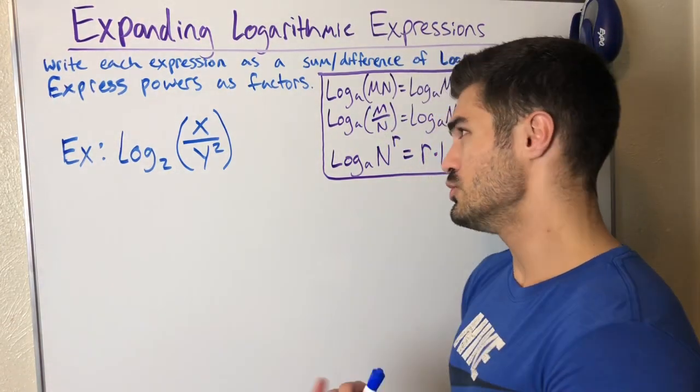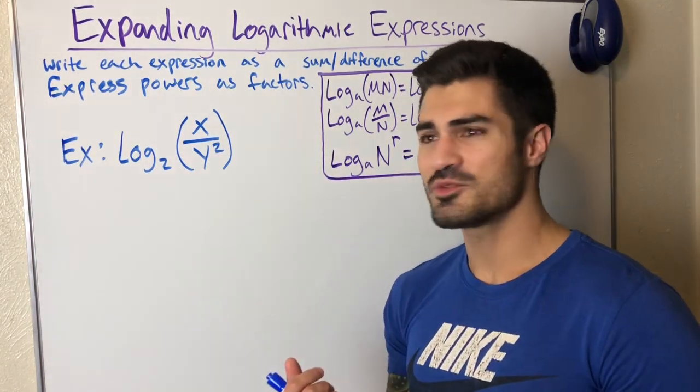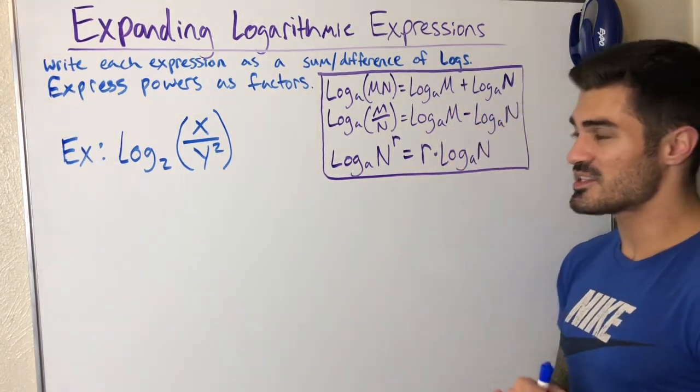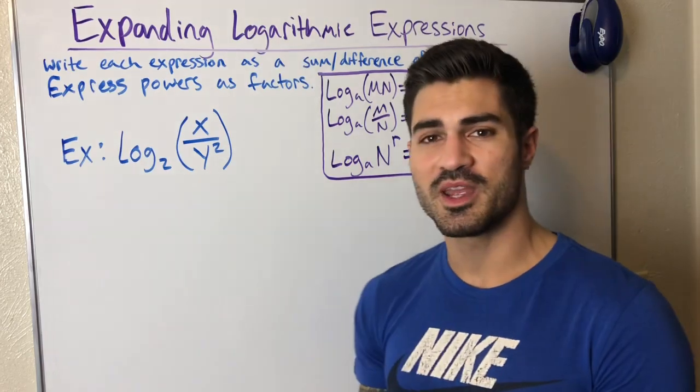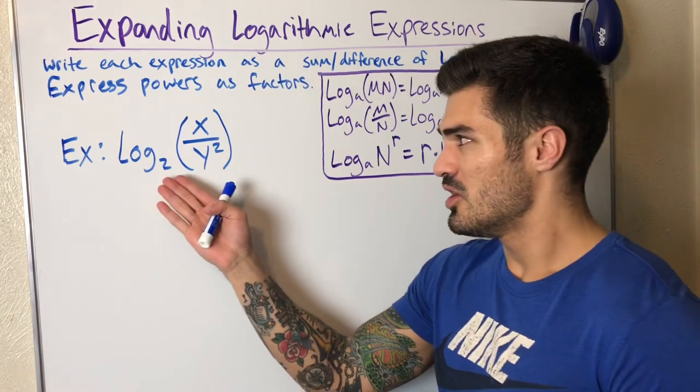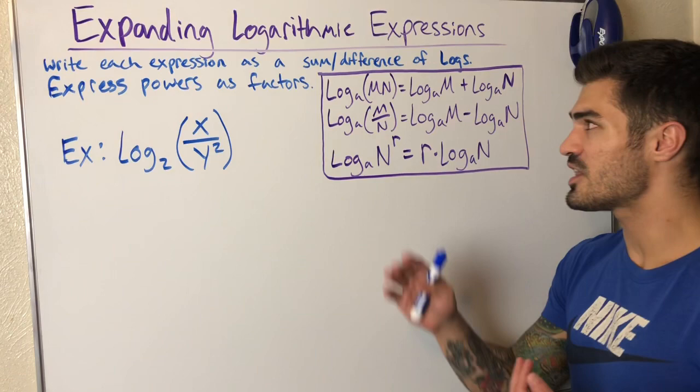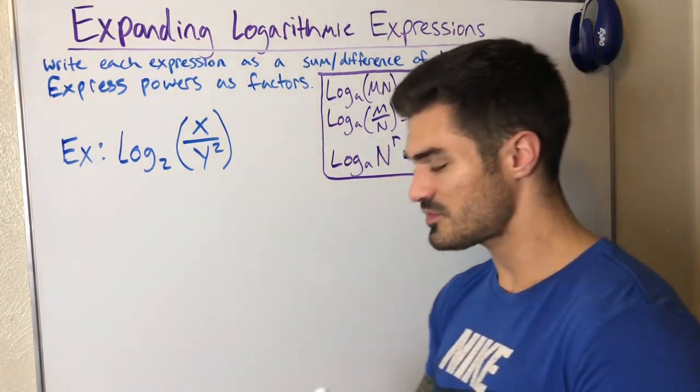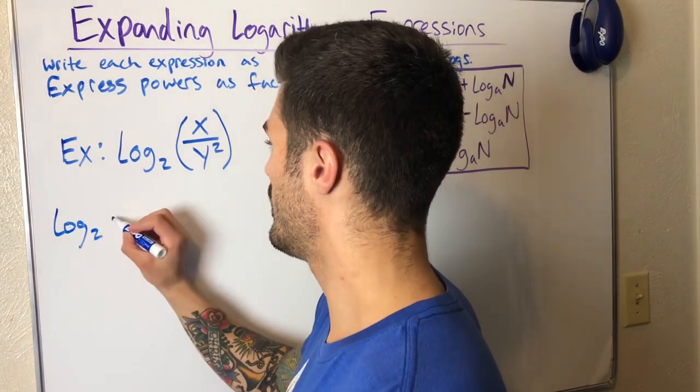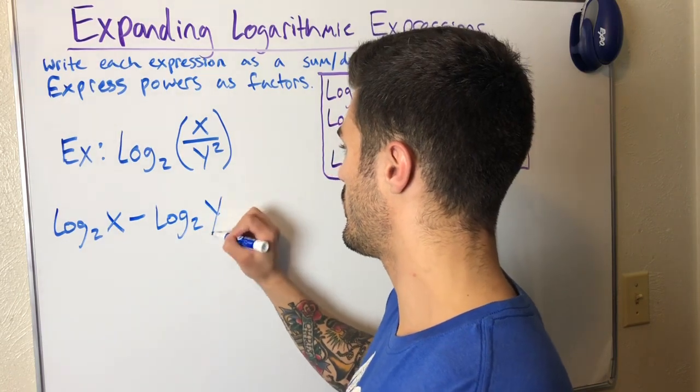We have log base two of x over y squared. Our base doesn't really matter in these problems. When we get to condensing, in order to combine these the base has to be the same, but we don't really care what the base is as long as it's the same. In this case we're expanding, so we're not worried about the base. What we are worried about is which property are we going to use to expand this. So the first thing I would do is separate it since we have division. I can rewrite this as log base two of x minus log base two y squared.